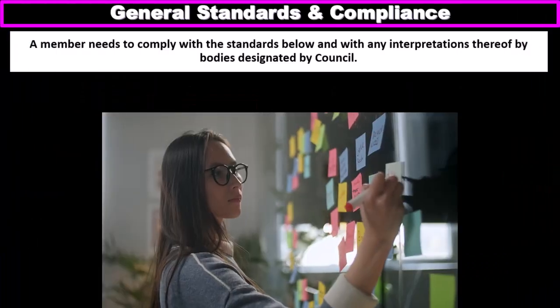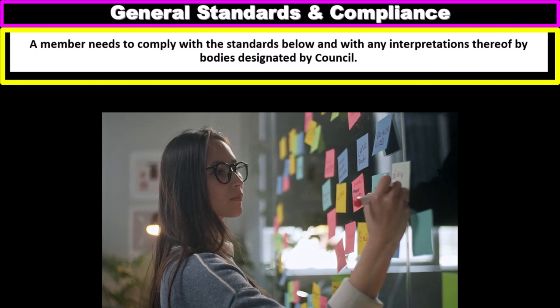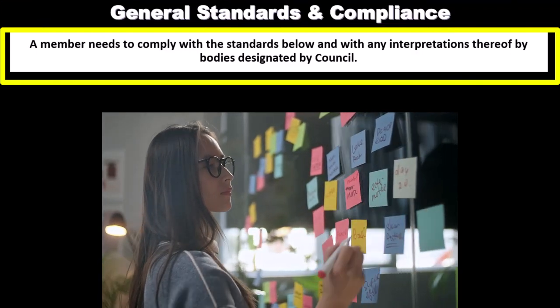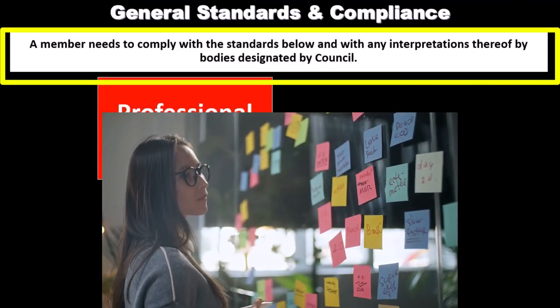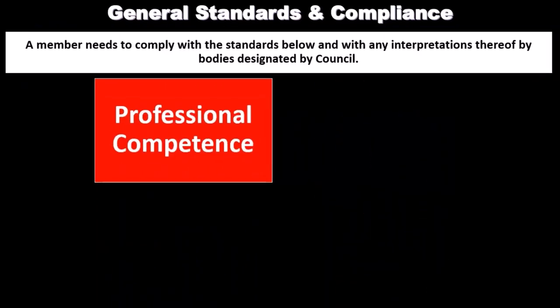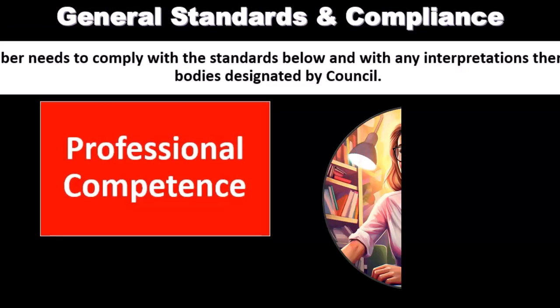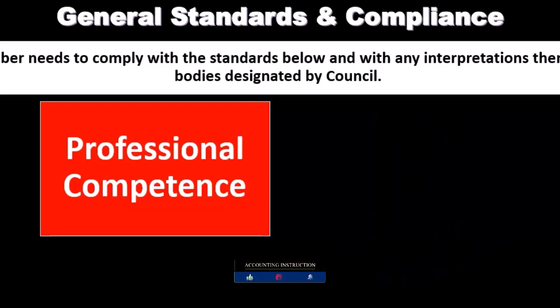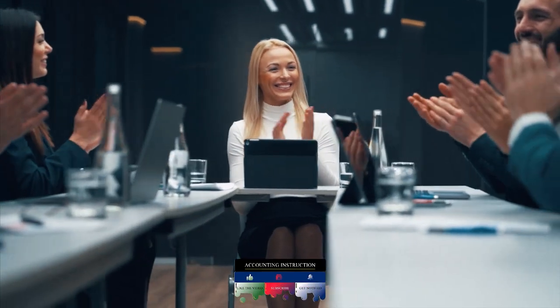A member needs to comply with the standards and any interpretations thereof by bodies designated by council. That includes professional competence — we've got to make sure that there is professional competence. If we're in an audit engagement, we want to make sure that there is professional competence with regards to it. That may seem obvious, but note that there are a lot of different types of engagements. Not every audit is the same; we could be auditing different types of industries.